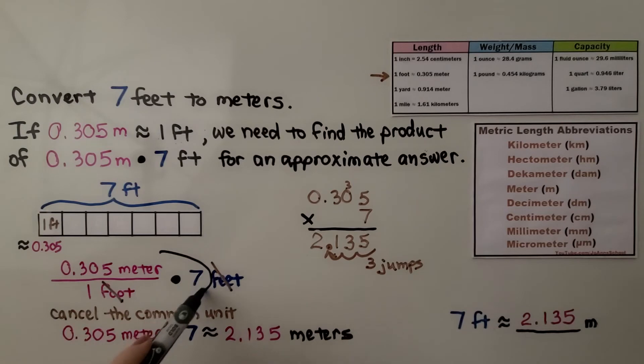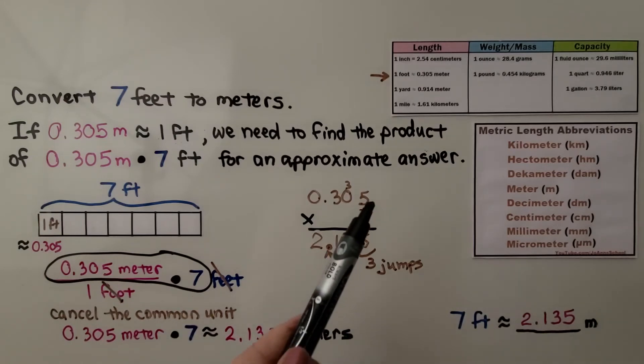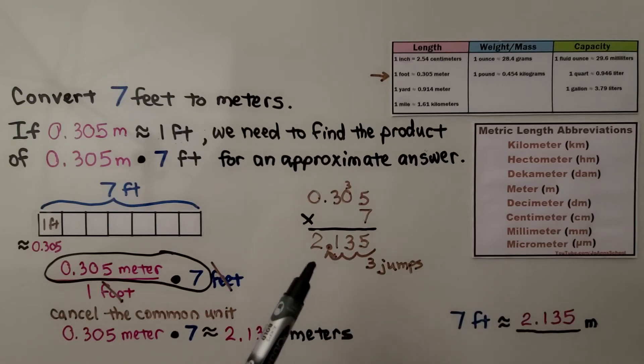Because we crossed off that common unit, this is what we get. We do the math on the side. We have 3 jumps in the equation, so there's going to be 3 jumps in our product. And we get 2.135 meters for 7 feet.